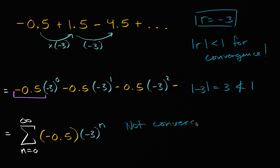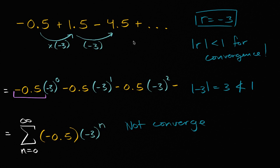And even looking at the series, it makes sense, because the magnitudes of each of these terms are getting larger and larger. We're flipping between adding and subtracting, but we're adding and subtracting larger and larger values. Intuitively, when things converge, each successive term tends to get diminishingly small, or cancels out in some interesting way. Because the absolute value of the common ratio is greater than or equal to one, this is not going to converge to a value.